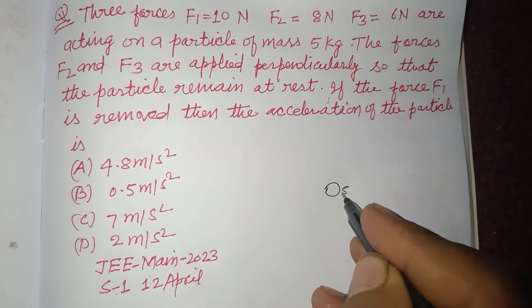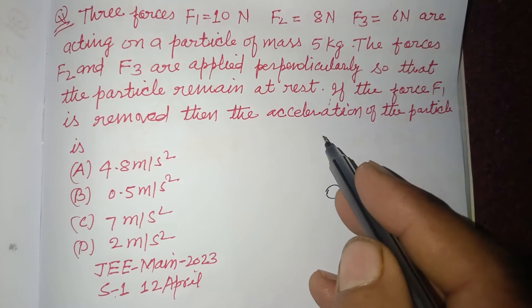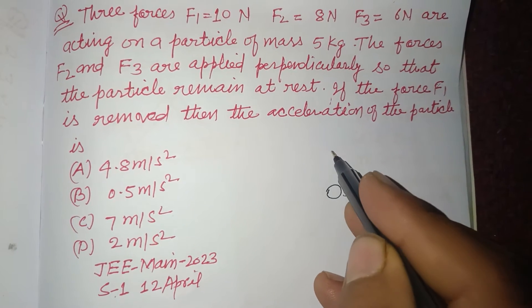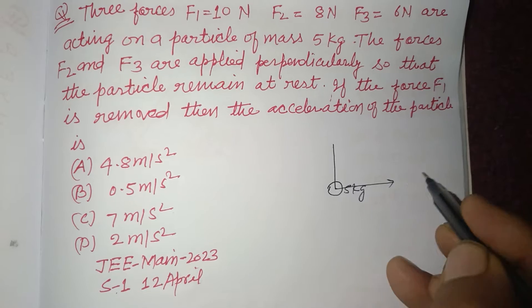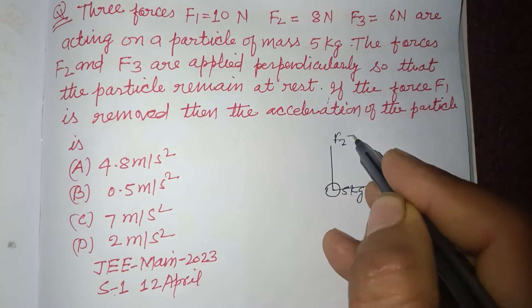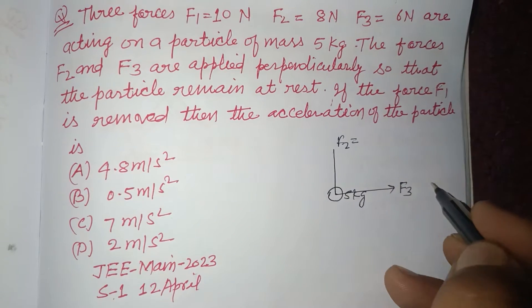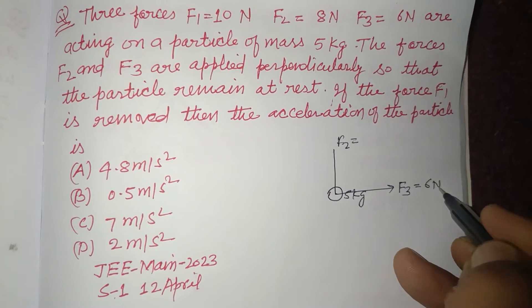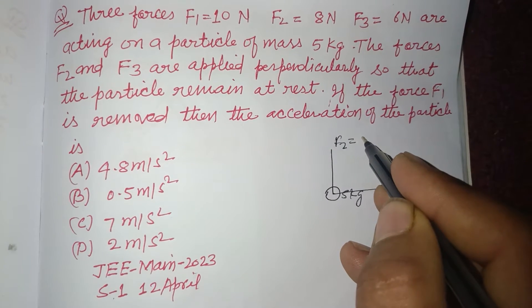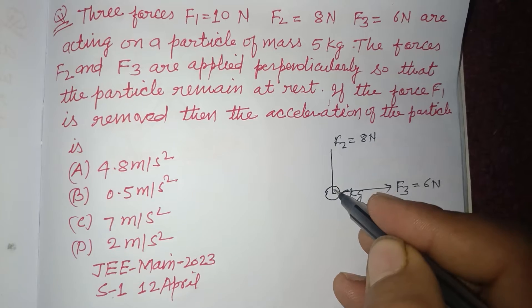and three forces where F1, F2, and F3 are perpendicular to each other. So this is F3 and this is F2, which is F3 = 6 N and F2 = 8 N, so their resultant works in direction because they are perpendicular.